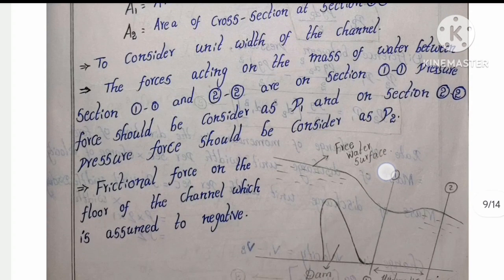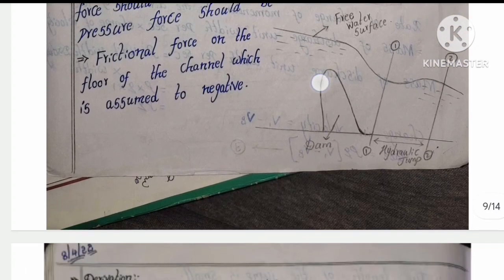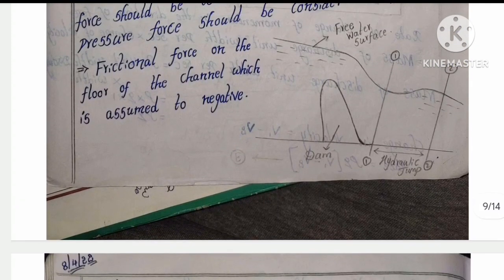The width of the channel is considered as one unit width. The forces acting on the mass of water between sections 1-1 and 2-2 are considered. At section 1-1 the pressure force is P1, and at section 2-2 the pressure force is P2. The frictional force on the floor of the channel is assumed to be neglected.